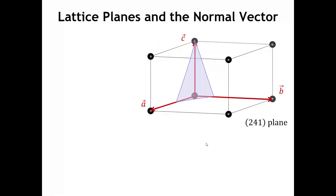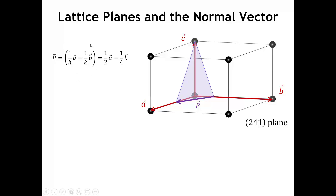How can we define a plane in terms of vectors? One way is to specify two vectors contained within the plane. For example, if we look at the bottom edge of the triangle, that's a vector contained entirely within the plane. The coordinates of this vector P can be obtained by taking the point one-half A minus the point one-quarter B. So for any intercept with the A and B axes, vector P has the value A over 2 minus B over 4.